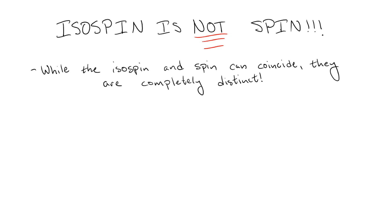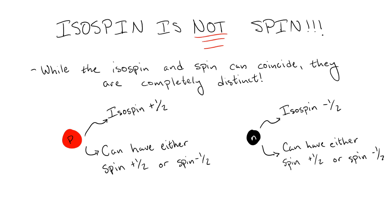As an example, we can consider the proton. We can think of this as the isospin up state, corresponding to the total isospin half doublet. However, the proton can still either be in the spin up or the spin down state, similar for the neutron. This can be considered the isospin down state of the nucleon doublet, but again, a neutron can have either spin up or spin down.